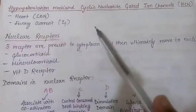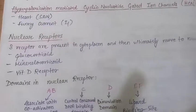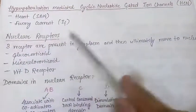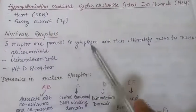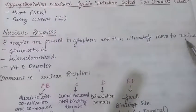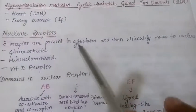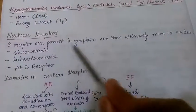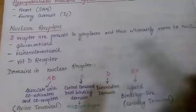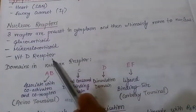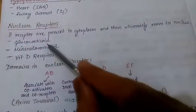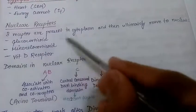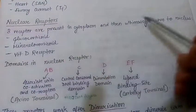Now we have discussed voltage-gated and ligand-gated ion channels. We are moving to nuclear receptors. Three receptors — glucocorticoid receptor, mineralocorticoid receptor, and vitamin D receptor — are present in the cytoplasm but ultimately move to the nucleus. They are known as nuclear receptors. When the ligand comes and binds, they move from the cytoplasm to the nucleus.